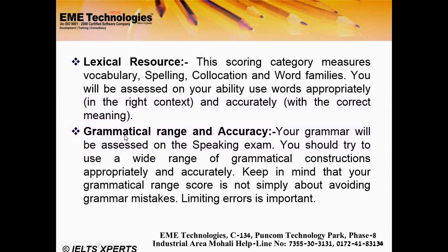Fourth is Grammatical Range and Accuracy — whether your grammar is correct and varied. This includes using the appropriate tense: future, past, or present tense, as well as forming proper sentences. This is recorded in the band scoring criteria.